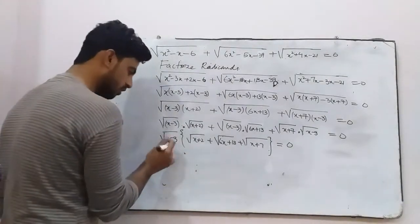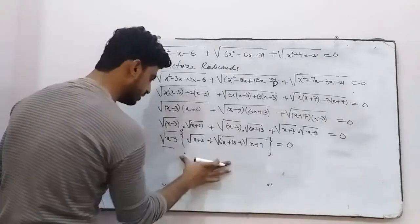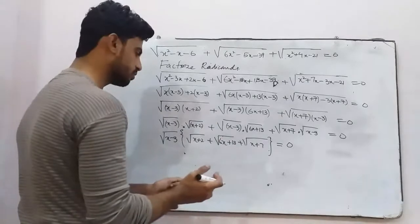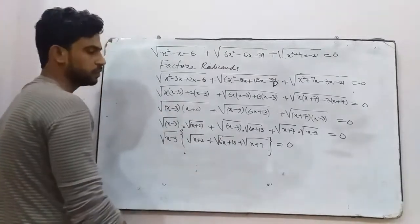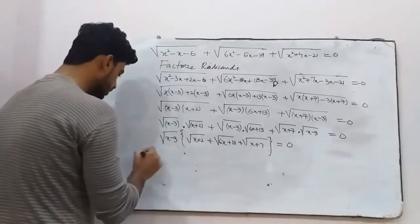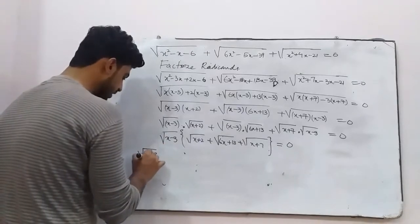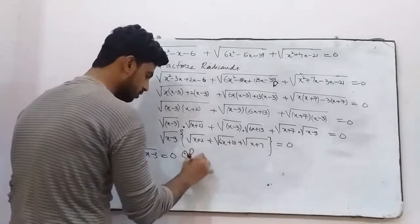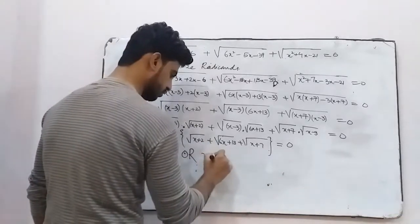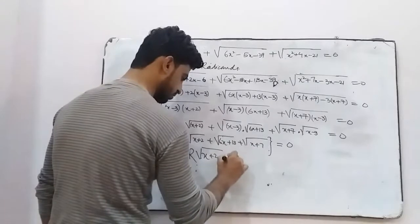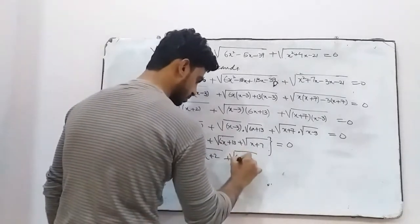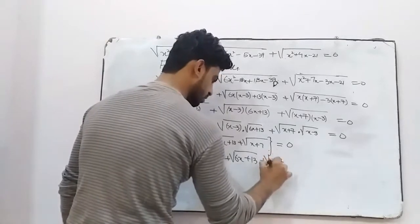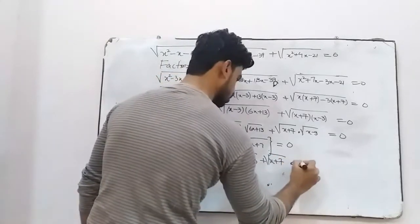Remaining terms: square root(6x plus 13) plus square root(x plus 7) equals 0. We have a condition where the product of two terms equals 0, meaning either of them must equal 0. So either the radical x minus 3 equals 0, or the entire remaining term with square root(6x plus 13) equals 0.